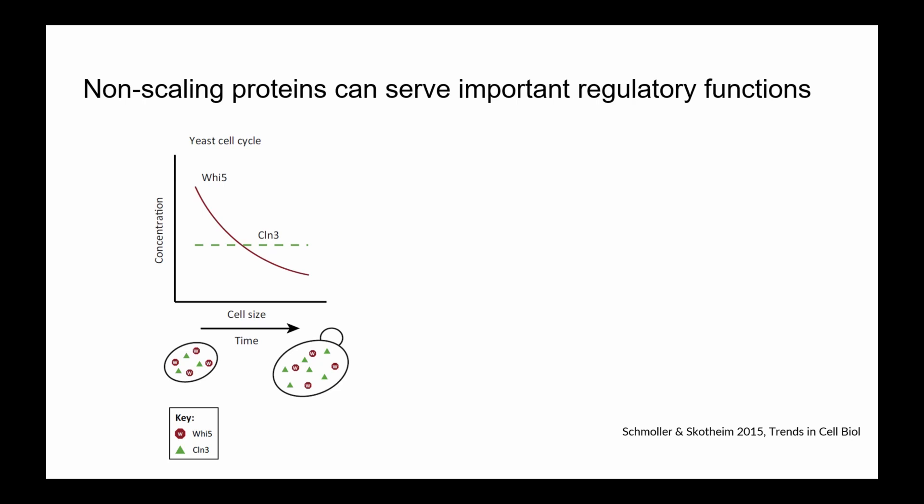This is in contrast to Cln3, which is a G1/S cyclin that acts as a cell cycle activator in the G1/S phase to push the cell cycle through, and that concentration is constant. So you can see how, with the increase in cell size, the cell can receive a size-dependent signal on how big it is, thus triggering cell division and providing an avenue of cell size regulation.